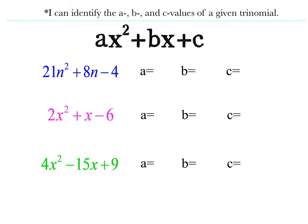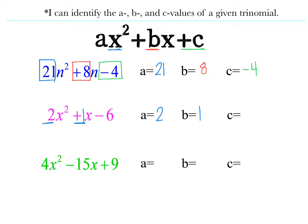One more sub-skill is to be able to identify the A, the B, and the C of a given trinomial. The A value is always the coefficient with the x squared term - in this first one, A is 21. The B value is always the coefficient with the x to the first power term, so in this case it's positive eight. And the C value is always the constant on the end - we want to keep the signs with them, so that would be negative four. In the second example, A is two, B has no number so it's a positive one, and C is negative six. Pause the video and identify the A, B, and C of the last term. Hopefully you got four, negative 15, and positive nine.